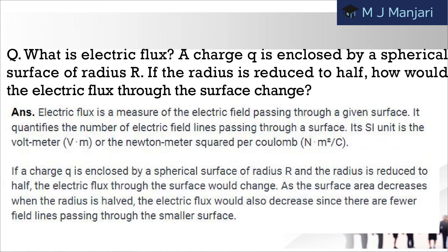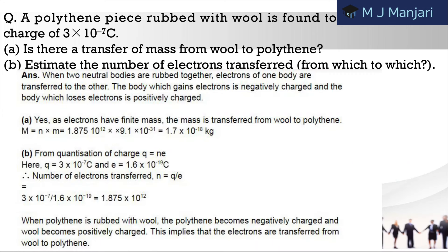Next question: what is electric flux? A charge Q is enclosed by a spherical surface of radius R. If the radius is reduced to half, how would the electric flux through the surface change? Next: a polythene piece rubbed with wool is found to have a negative charge of 3×10⁻⁷ coulomb. A) Is there a transfer of mass from wool to polythene? B) Estimate the number of electrons transferred, and from which to which.